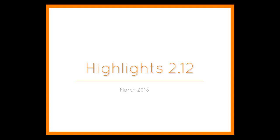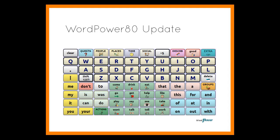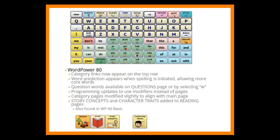Highlights of 2.12. WordPower 80 was significantly updated with the 2.12 update. Category links now appear on the top row. Word prediction appears when spelling is initiated, which allows for more core words on the home page. Question words are available on the questions page or by selecting W on the keyboard. Additionally, programming updates use modifiers instead of pages.